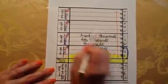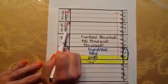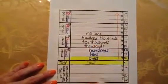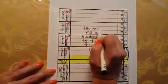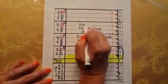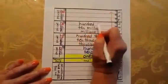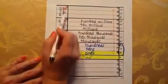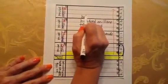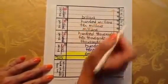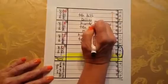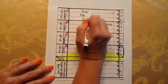Moving to a new period again, as shown by the thick lines. The first column will be the name of the period: millions. It follows the same pattern — ten millions and hundred millions. Then I see the thick lines again and move to the billions period. First column is billions, then ten billions and hundred billions.